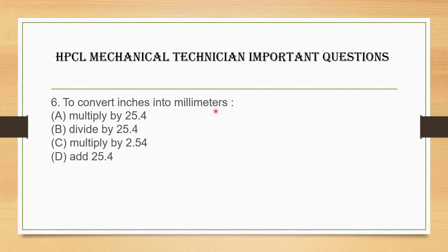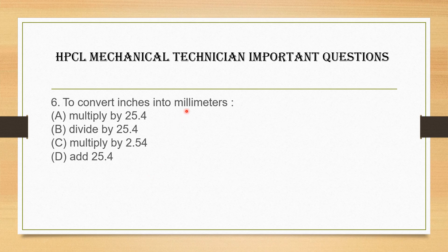Next question: how do you convert inches into millimeters? Options are: A. Multiply by 25.4, B. Divide by 25.4, C. Multiply by 2.54, D. Add by 25.4. The answer is A — multiply by 25.4. One inch is equal to 25.4 mm.